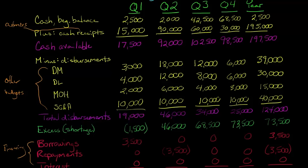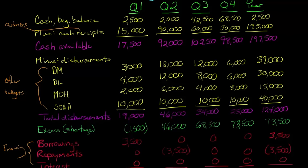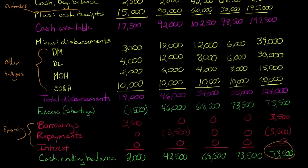When we look at our final column, we've got the year total — basically summaries of things throughout the year, including summaries of disbursements and so forth. The beginning balance, of course, is the beginning balance of quarter one, not the total of all quarters, for reasons we talked about in previous videos. And ultimately, at the end of the year, we're going to be left with $73,500, which is also the ending balance for quarter four.